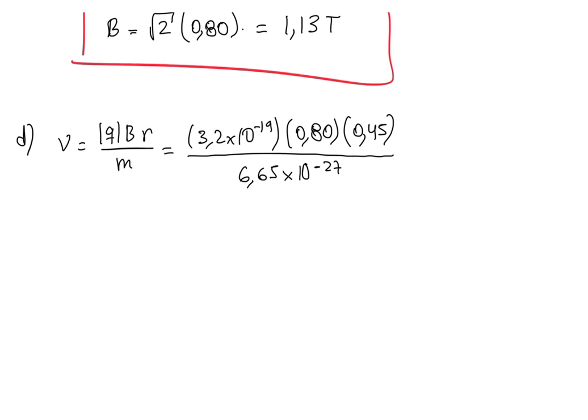The speed obtained is then substituted into the kinetic energy expression KE = ½mv². Substituting the calculated speed gives the maximum kinetic energy for the alpha particle. That's the solution for this problem.